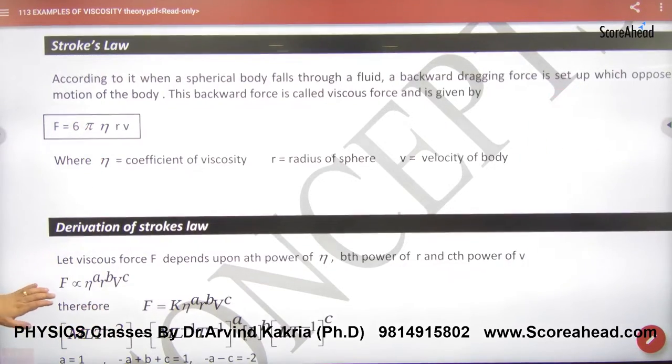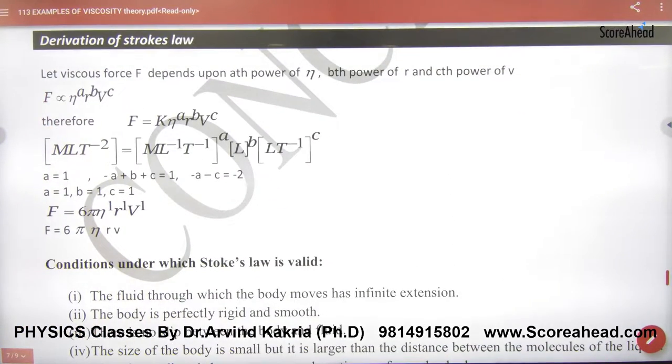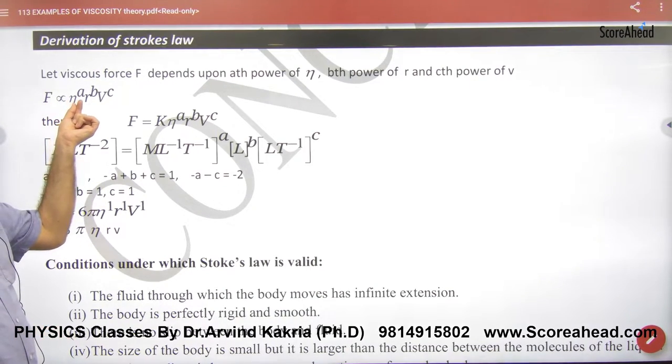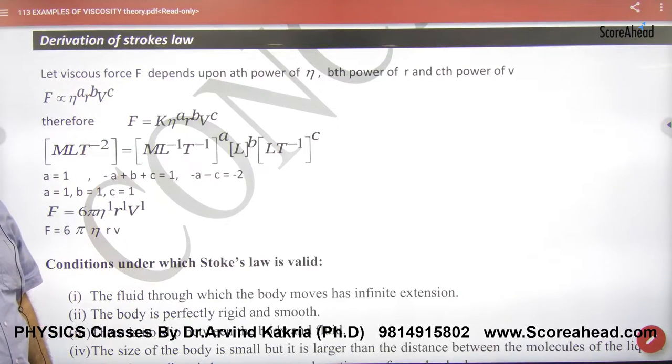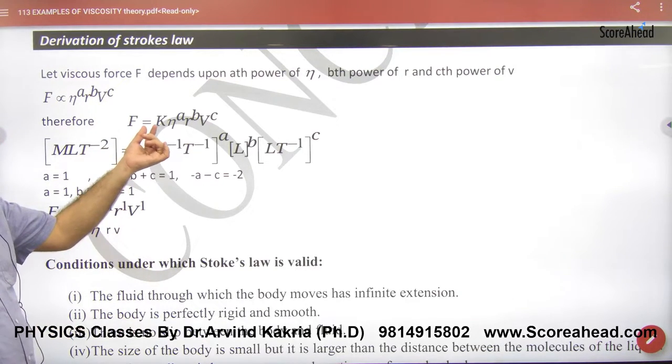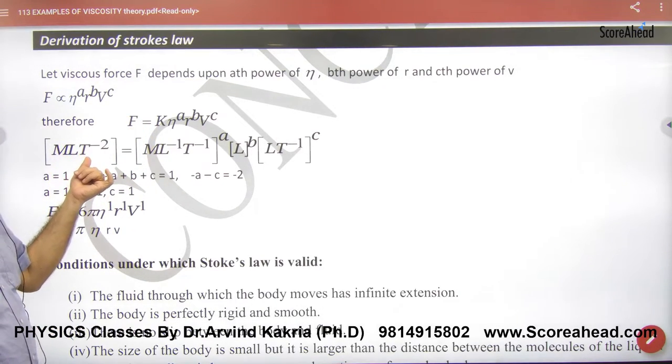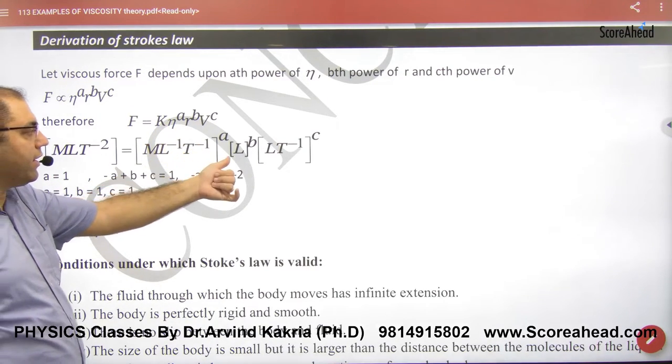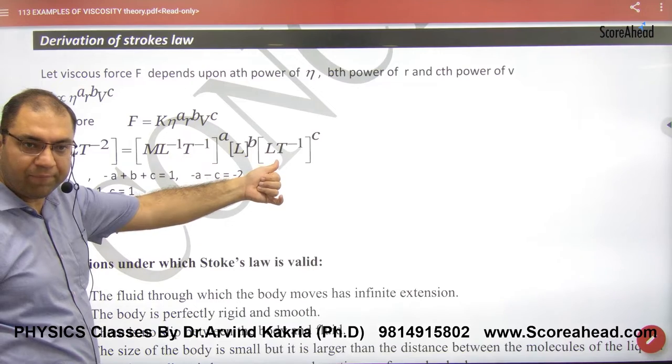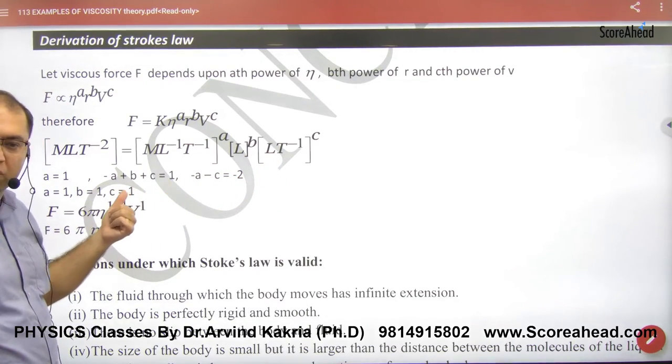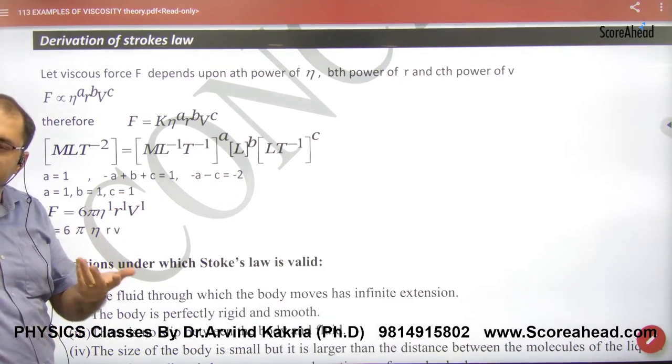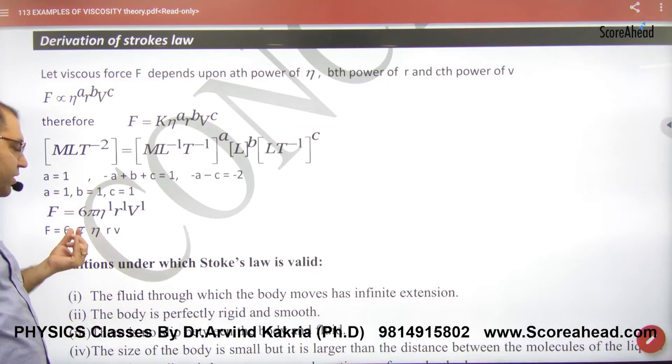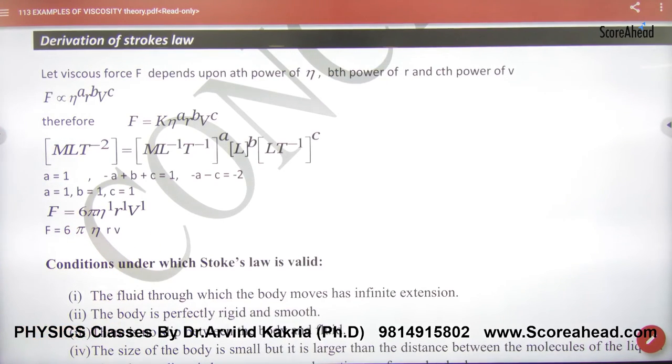اور اس کا proof یا derivation of Stokes law سب سے آسان ہے. Units and dimension کیا کرنا ہے: Force proportional to η, r اور v raised to power a, b, c تو constant لگا دیا. Force کا dimension formula MLT⁻², η کا ML⁻¹T⁻¹, radius L اور velocity LT⁻¹. تو یاد کرو کرتے ہیں نا equation to a, b, c. مزے کی بات ہے سب کو پتہ 1, 1, 1 آئے ہیں تبھی تو فارمولا بنے گا constant 6π لگا کے 6πηrv.